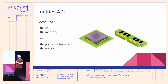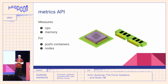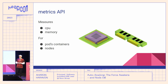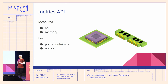The metrics API provides CPU and memory utilization for nodes and pods. If your horizontal autoscaling strategy is well defined in those terms, then you do not need a KEDA scaler. All you need in this case is the Kubernetes metrics server, which implements the metrics API.